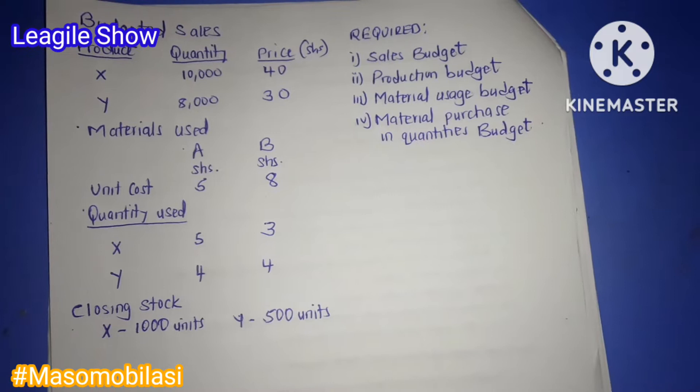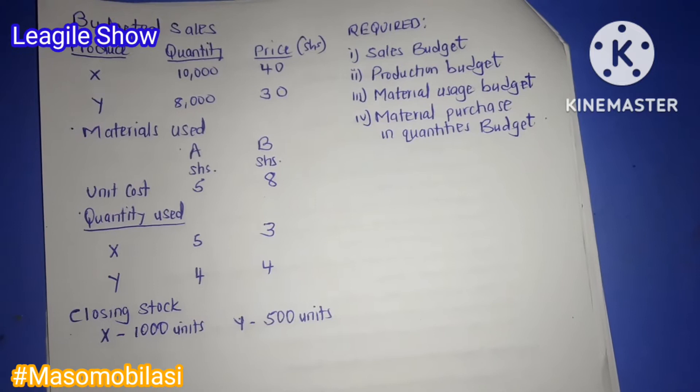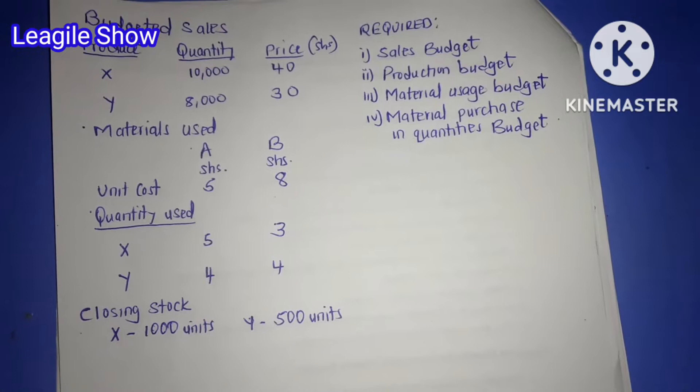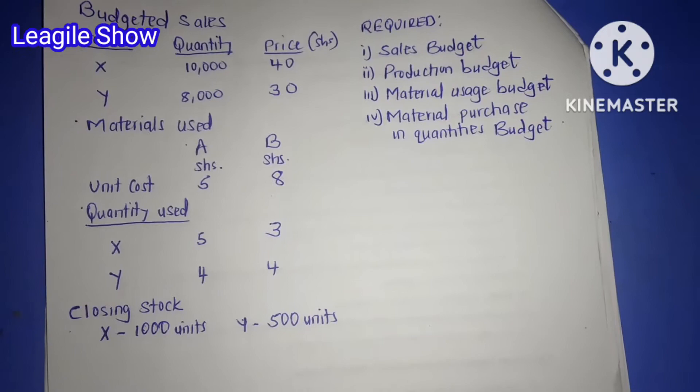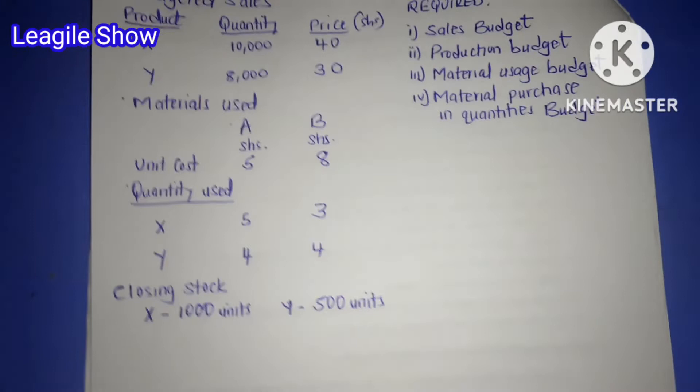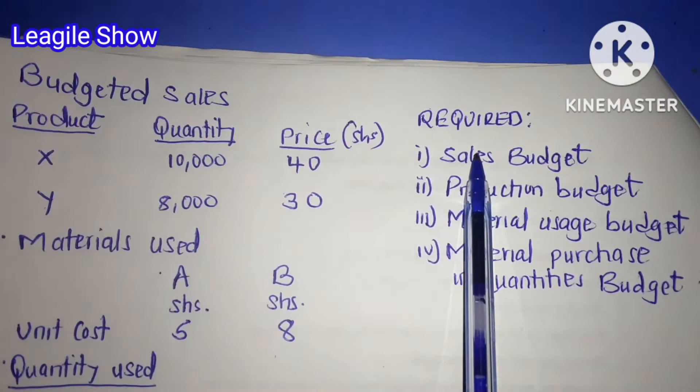The other types of budgets will also be covered in subsequent videos. We have this question here where we have been given data based on the budgeted sale for various materials. The materials used, unit cost, and quantity used per material are also given. We are also given the closing stock of each product. So we are going to start by calculating what we refer to as the sales budget.